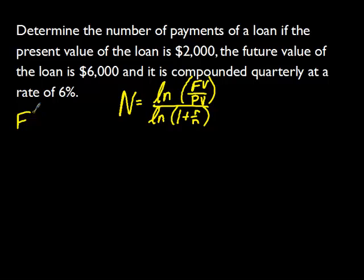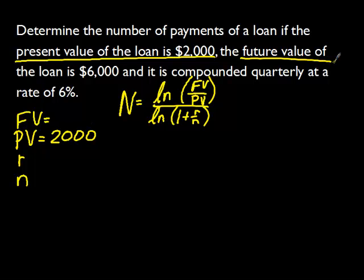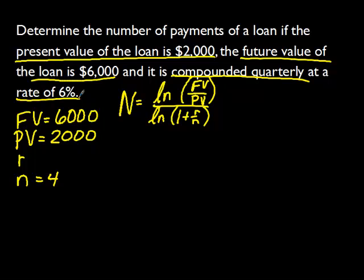We will go through and start filling in what we know. We need to know FV, PV, R, and N. We need to pull this information out of our problem. If we look through, it says that the present value is $2,000, so PV equals 2,000. It says the future value is 6,000, so FV equals 6,000. And it's compounding quarterly, so N equals 4, at a rate of 6%. Well, 6% is a decimal, the same as .06.